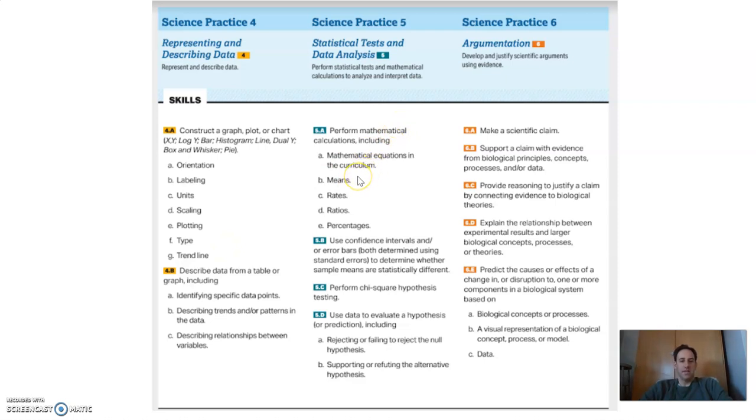Statistical tests and data analysis, you know, calculating means, ratios, percentages, using math in general. The standard confidence intervals, so the little standard error bars that we've been putting on our bar graphs to see if things are statistically different. Chi-square analysis, and then just, you know, null hypothesis. Do we accept or reject it? And then finally, argumentation, simply the idea of making a claim and supporting it with evidence.